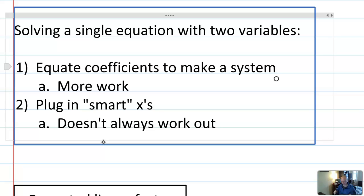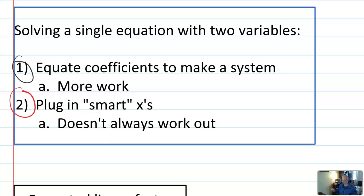Then the other method is plugging in these smart x values, which seems awesome, but it doesn't always work out. Sometimes an x you pick will cause the entire equation to zero out, for example. That's what's going to happen in the problem down below. Actually sometimes you have to make a system. You have to be able to do it one way number one, and then if you can do it in way number two, that's just like bonus icing, but it's not going to work all the time.